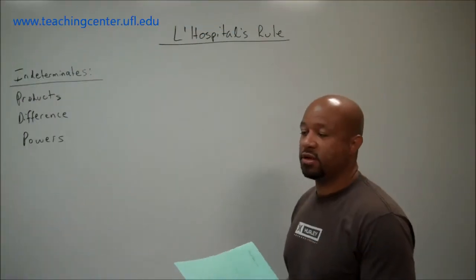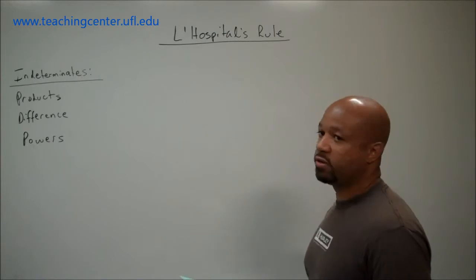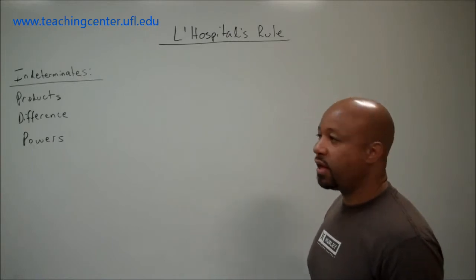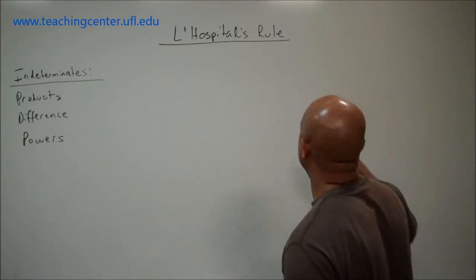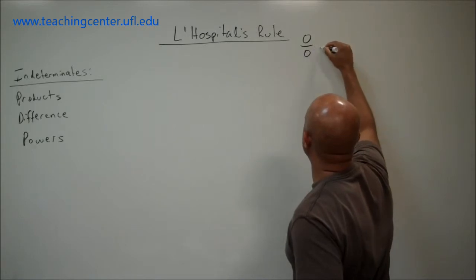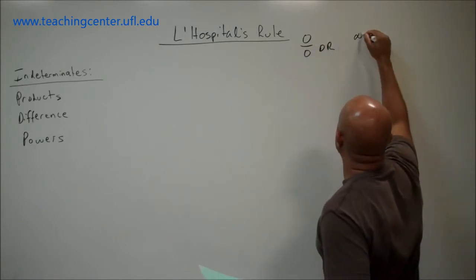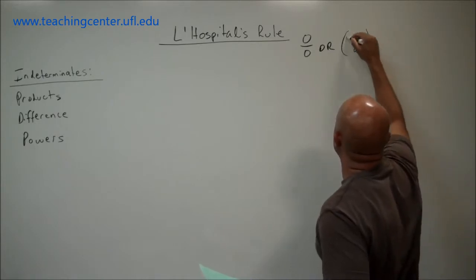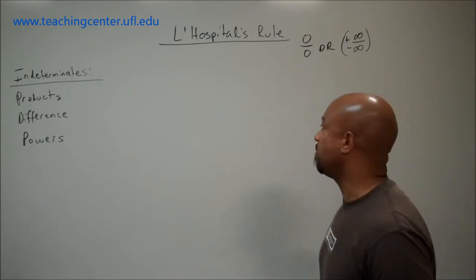Now that we've learned the basics of L'Hopital's Rule and the two fundamental indeterminate forms that allow us to apply it, just to review, those two indeterminate forms are 0 over 0 or infinity over infinity. This is actually plus or minus infinity — it doesn't matter if it's negative or positive.